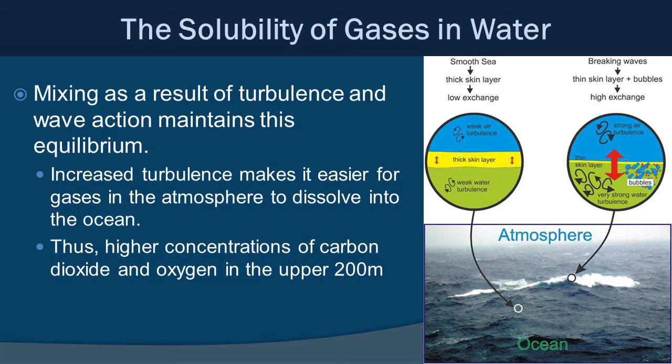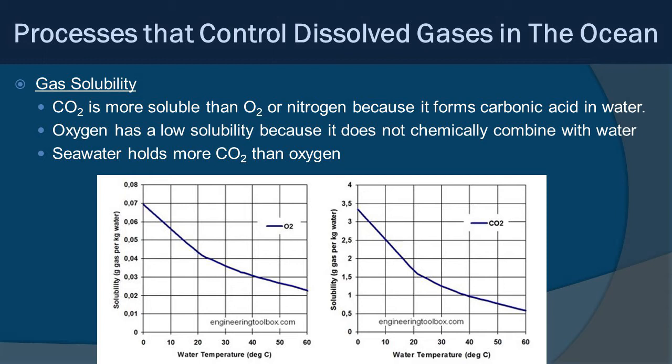Thus, higher concentrations of carbon dioxide and oxygen are generally found in the upper 200 meters of the ocean. If you have smoother seas with not a lot of wave action, that essentially creates a thicker skin using hydrogen bonding and surface tension, and you'll have less gas exchange. More waves, more wind, more turbulence means higher exchange. Not all gases are created equal: carbon dioxide is more soluble than oxygen or nitrogen because it forms carbonic acid — it has a chemical reaction with water.